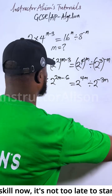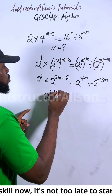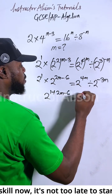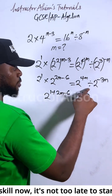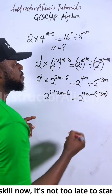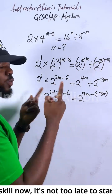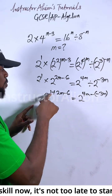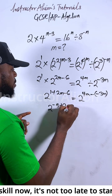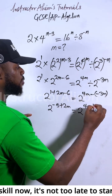So the base is the same — carry one and add everything on top: 2m minus 6. Then subtract because it's division: minus negative 3m. So on top we have 2m minus 6, and we're subtracting minus 3m. The final step — since the base is the same — we equate the powers. We do the last step: one minus six gives us minus five, plus two m, equal to two to the power of 4m plus 3m.